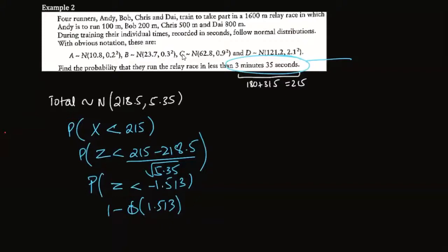Calculating this gives us a 6.51% chance that the team will beat the Olympic record. When you're stuck with continuity corrections, don't overthink it.